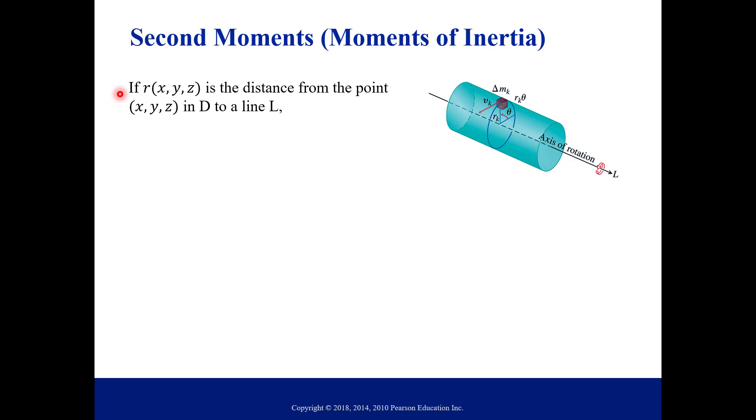Let's start with this distance here. So if R of a point XYZ is representing the distance from the point XYZ, or in our region D to a line L. So if you look at this visual, L is our axis of rotation, so we're rotating about L. And then R is just this distance to a point in our region. Then the moment of inertia, or our second moment of the mass, which is delta M.